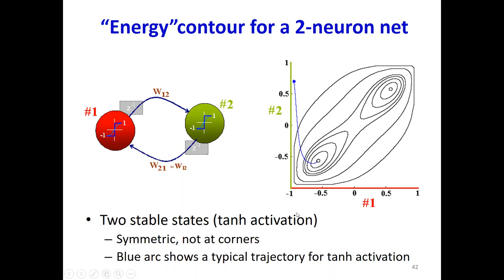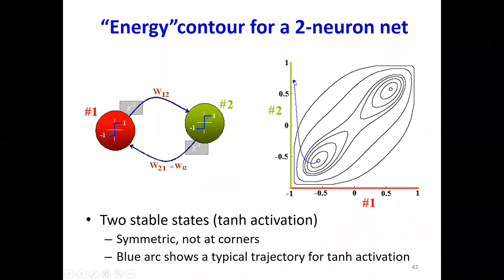For the example over here, the energy contour looks like so — it has these equal-value contours, meaning if you go around a particular loop, at every position on the loop the energy remains the same. As you go toward the centers of these two elliptical shapes, the value of the energy keeps decreasing. You can see that there are two minima: one at the bottom left corner and one at the top right corner. If you initialize the network at the blue dot and let it evolve, it would swing around and eventually settle at this corner — the remembered state.